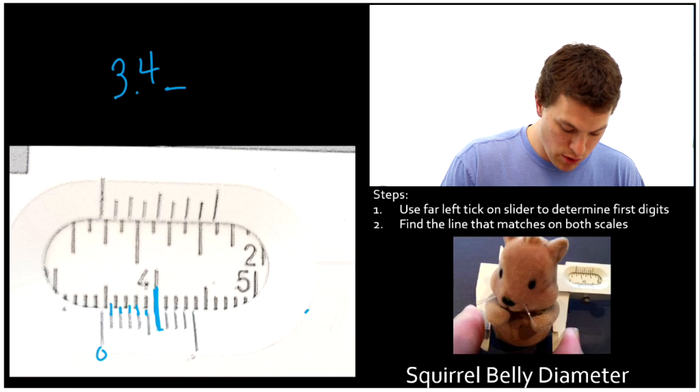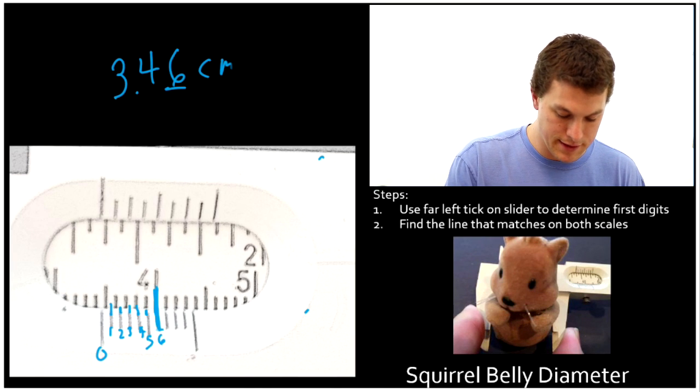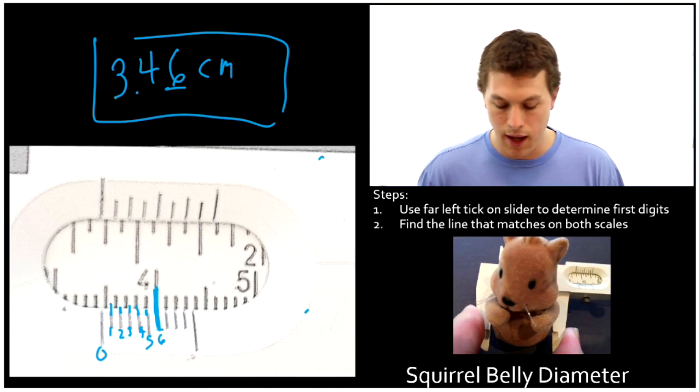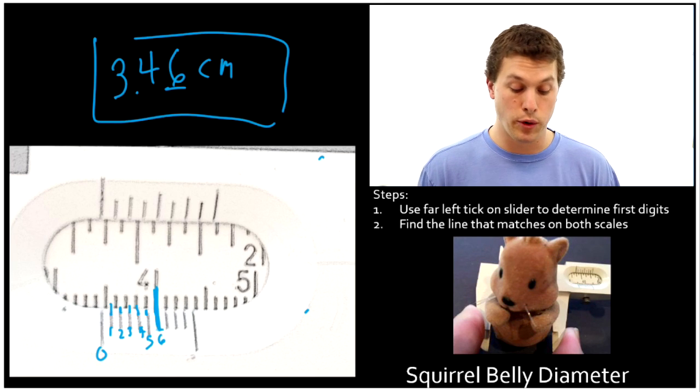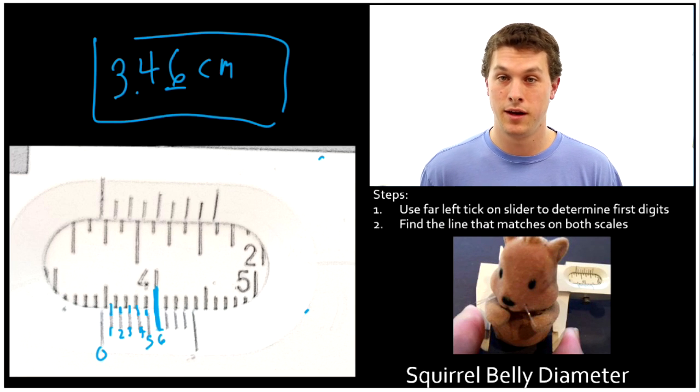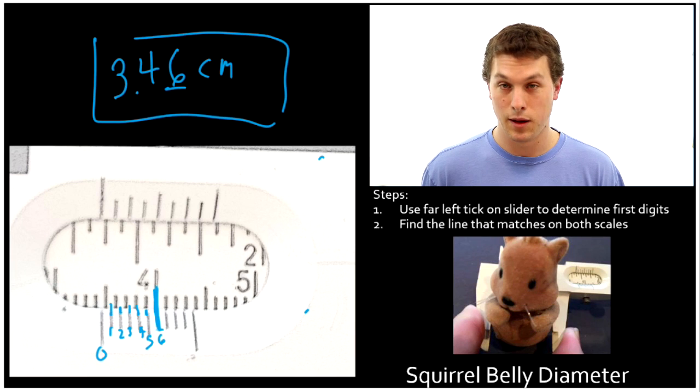And then again, we've got to count. Zero, one, two, three, four, five, six. So that means this digit should be six. And I'm going to add centimeters. So my squirrel belly's diameter is 3.46 centimeters. Seems like he's been eating too many nuts. He's got to cut back on those.